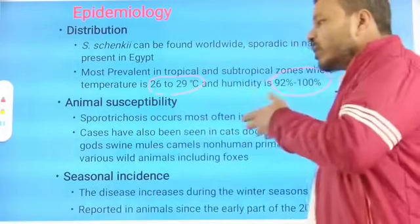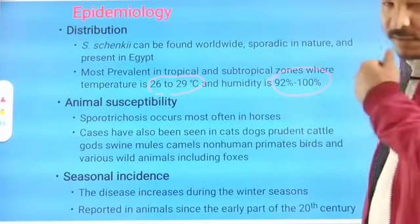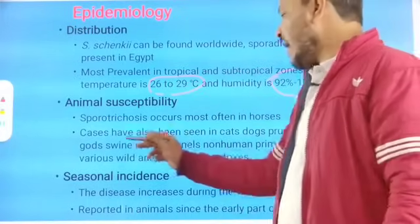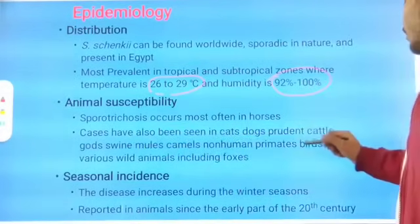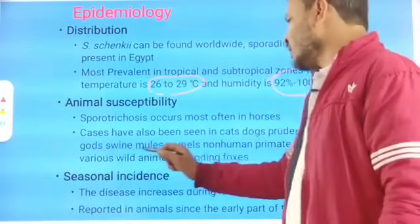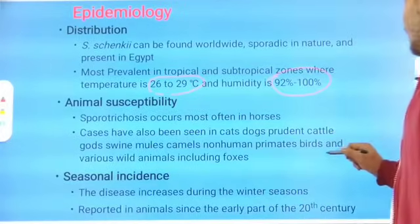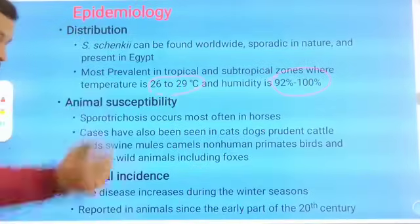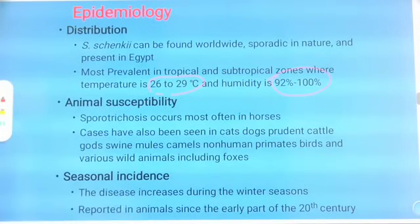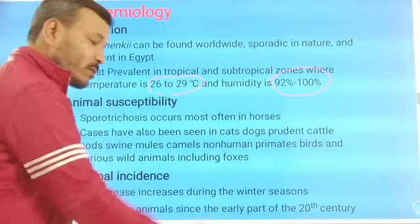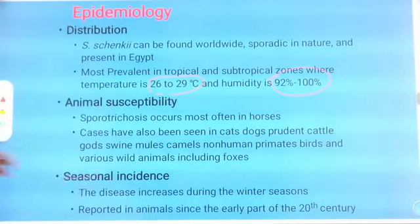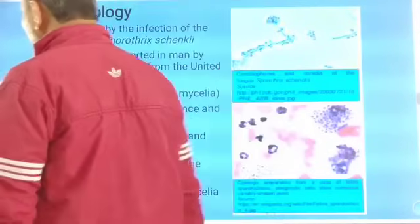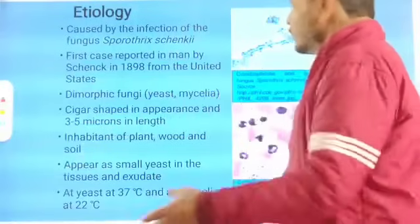When humidity is around 92%, this disease is more prevalent. Regarding animal susceptibility, Sporothrix occurs most often in horses, especially in areas where horse farming is present. Cases have also been seen in cats, dogs, cattle, swine, mules, camels, non-human primates, birds, and various wild animals including foxes. The disease increases during the winter season.